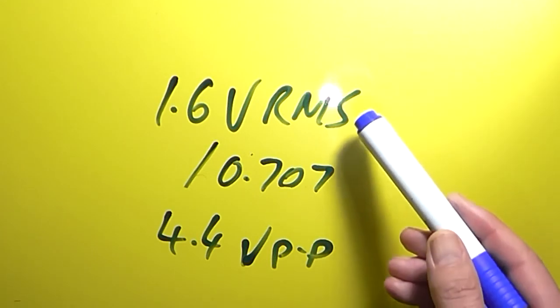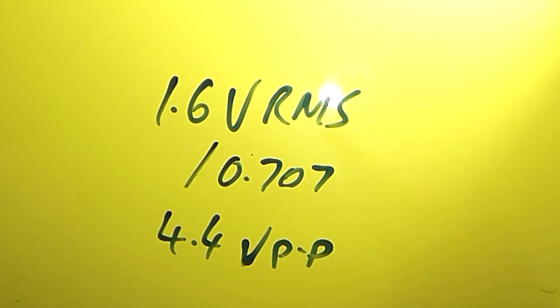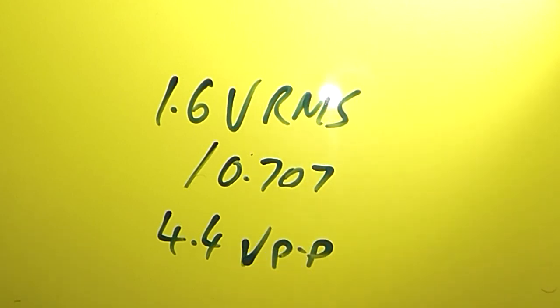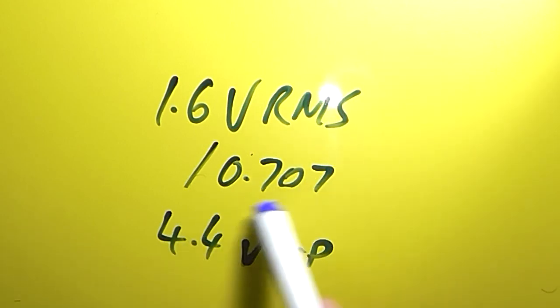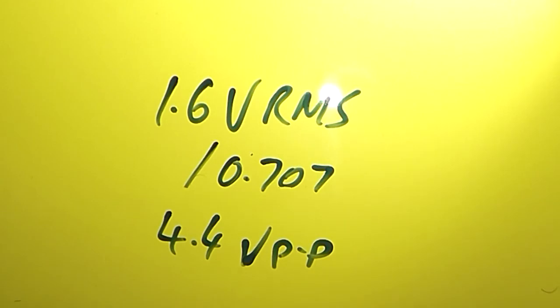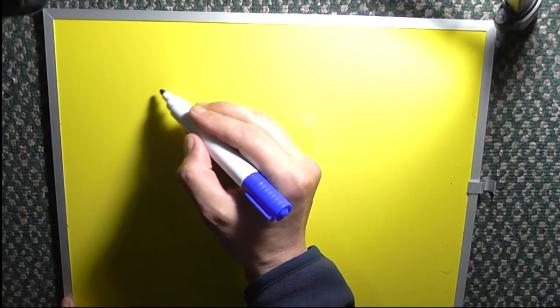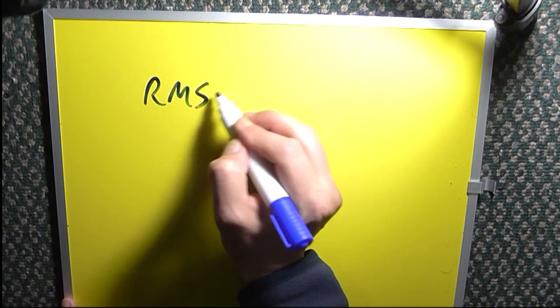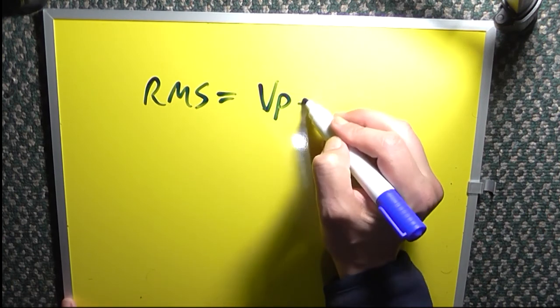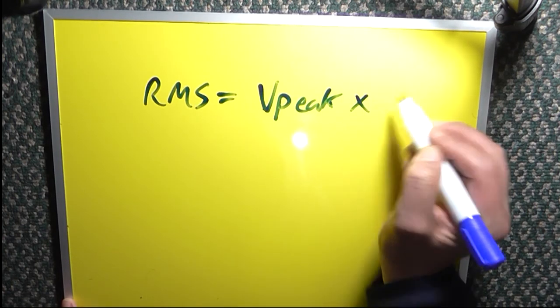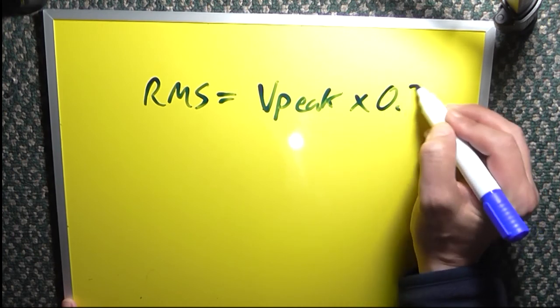I wanted to explain the relationship between the RMS voltage and the peak voltage — how it's derived from the peak-to-peak voltage using the magic number 0.707. Most oscilloscopes, especially the good DSOs, will actually display the RMS voltage, but if it doesn't, just remember: RMS equals V peak multiplied by 0.707. And that will give you your RMS voltage.